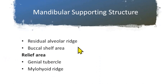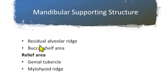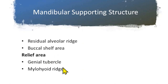Now let's see the different mandibular supporting structures. The first one is the residual alveolar ridge, the second is the buccal shelf area, and the various relief structures are the genial tubercle and the mylohyoid ridge.